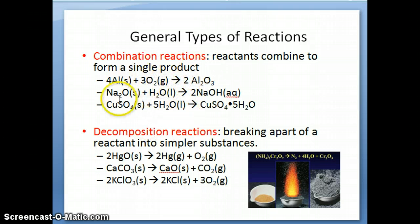So the examples here, as you can see, are all of that type where you have, in this case, aluminum and oxygen combining together to form aluminum oxide. And then you have sodium oxide and water combining to form sodium hydroxide, another one product. And here's copper sulfate and water combining together to form copper sulfate pentahydrate. So all of these are combination reactions.